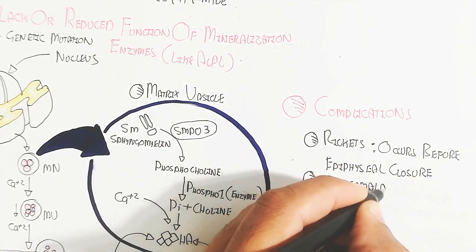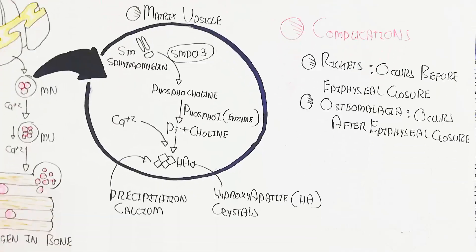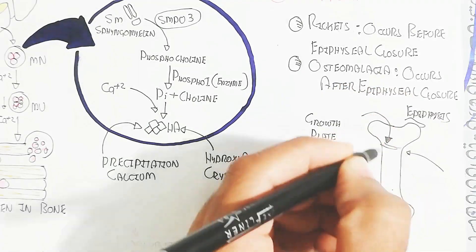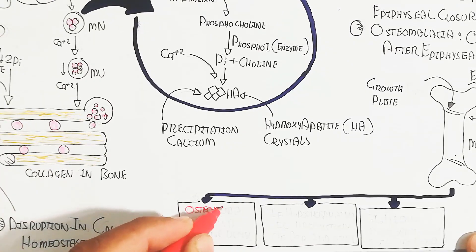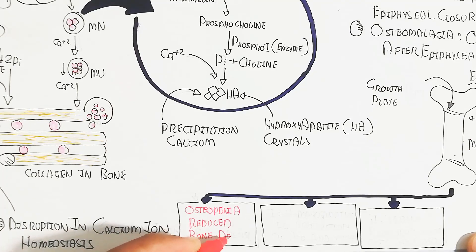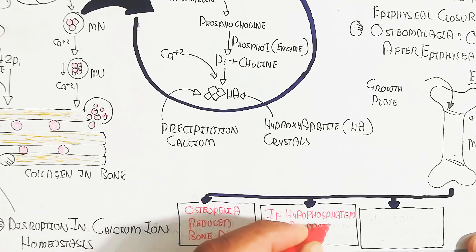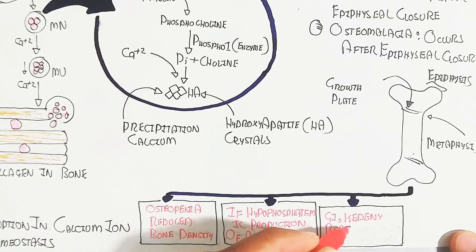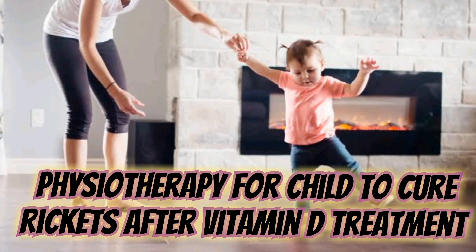Complications: rickets occurs before epiphyseal closure, and osteomalacia occurs after the epiphyseal closure. So in this way osteopenia, the reduced bone density, and hypophosphatemic production of ATP will lead to decreased ATP and cause cramps.